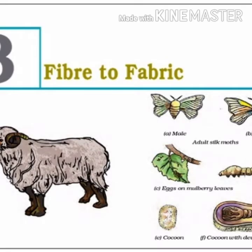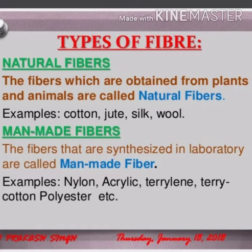Hello everybody, good morning to all. From Class 6 we have learned about a chapter named 'Fiber to Fabric.' In that chapter we studied about the different types of fibers — natural fibers and synthetic fibers. Natural fibers are mainly coming from plants and animals, and we also studied about two important plant fibers: cotton and jute.